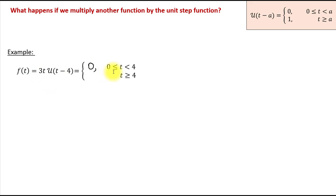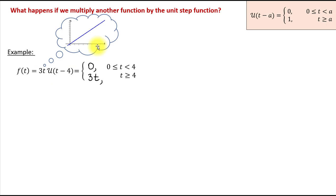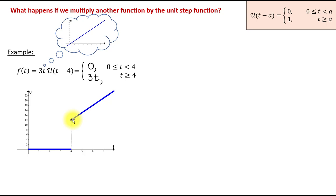We also know that the unit step function equals 1 for all values of t greater than or equal to 4, and 1 times 3t is just 3t. Looking at the graph of this piecewise defined function: 3t is a linear function, so its graph is a straight line. From 0 to 4 the function equals 0, and after 4 we see the portion of the graph of 3t. Thinking of the unit step function as an on/off switch, when multiplied with 3t, we can say it turns 3t on at t equals 4.